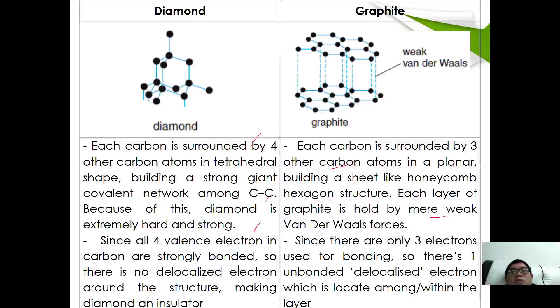Since all 4 valence electrons are used in diamonds, there is no delocalized electron in the structure, making diamond an insulator. Whereas for graphite, since there are only 3 electrons used for bonding, therefore there is 1 unbonded delocalized electron in between the layers, making graphite a good conductor of electricity.